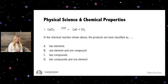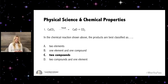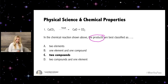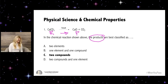Let's find out the answer. So the answer to this question is C, two compounds. Let's explore why this is the answer. The main thing about science is the vocabulary terms. The question asks about the products. In a chemical equation, we always start off with the reactants, then we yield the products. So we're going to be focusing on these two right here.